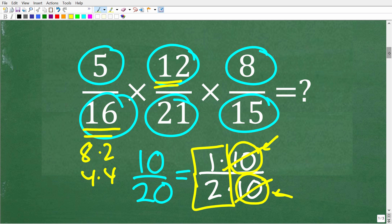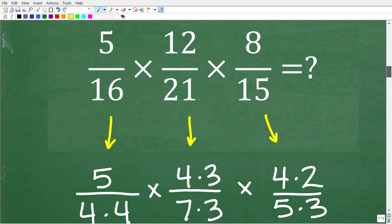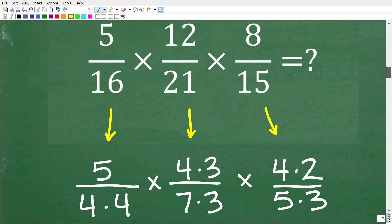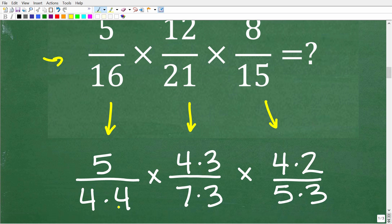So let's go ahead and take a look at how I did this. So here is our three fractions and I'm thinking of these three fractions in this way. So 5 over 16, I'm thinking of this as 5 over 4 times 4, and I'm going to write it this way as well.